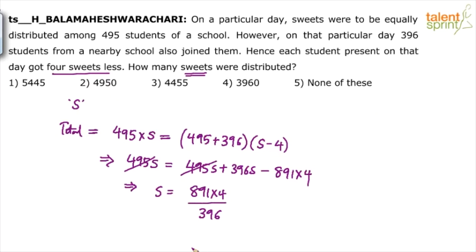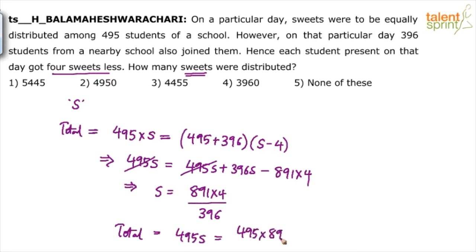But what do we have to find out? We have to find out 495S. So 495 has to be multiplied in. Simplify and we will get the answer. Total will be equal to 495S, which is 495 into 891 into 4 divided by 396. You can cancel with 9, giving 9 into 55, and this is 9 into 44.